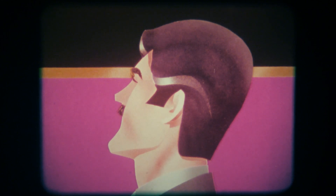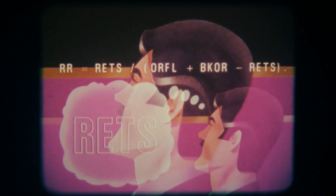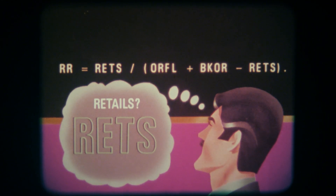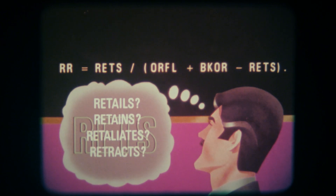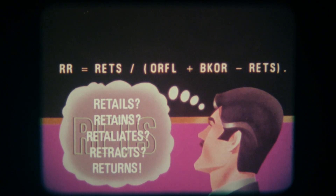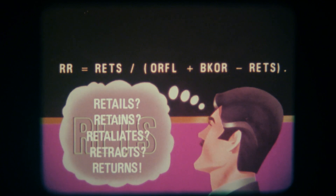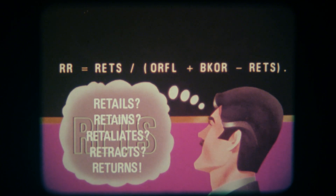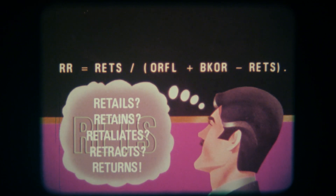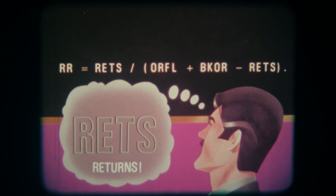Try to guess just to get started. Retails, retains, retaliates, retracts — return. It might mean returns, but that's only a good guess. It happens to be a good guess. But why should we have to guess? What could the programmer have done to make this program better structured, less guessing for us? He could have called it returns, like this.